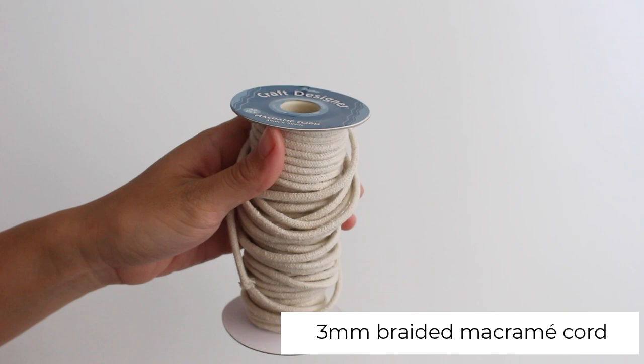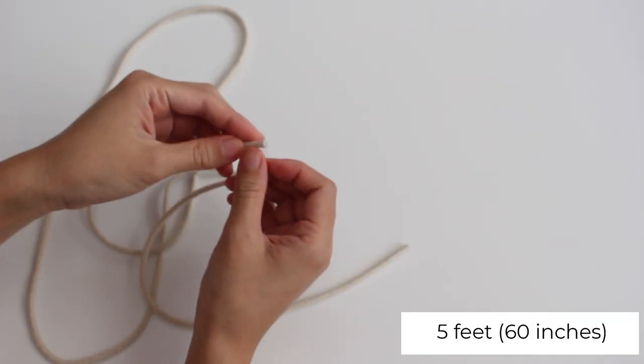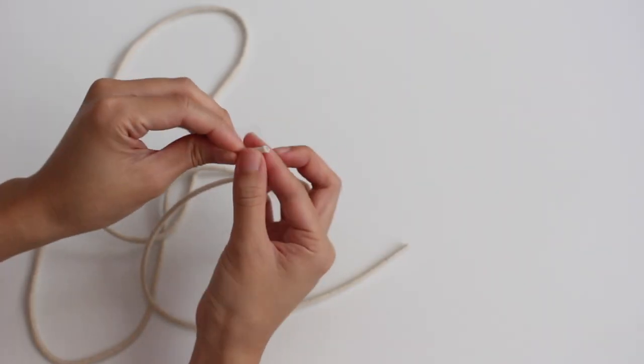I used 3mm braided macrame cord. The cord that I used was 5 feet. I wrapped the ends with tape to make it easier to weave.